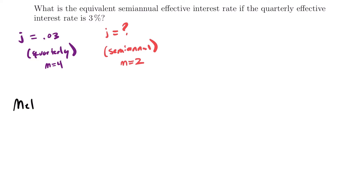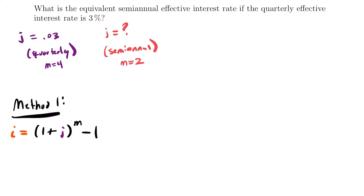For our first method, we're going to take our quarterly rate and convert it to an annual rate, then take the annual rate and convert it to a semi-annual rate — two steps. Using our conversion formula, the annual rate I equals (1 plus the non-annual rate) to the power of M, minus 1. So this is equal to (1 + 0.03) to the power of 4, since this is a quarterly rate, minus 1. Plugging that into the calculator, I is equal to 0.1255.